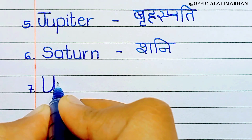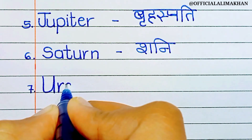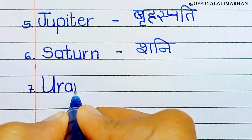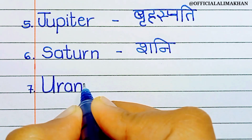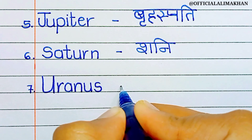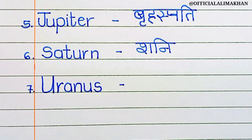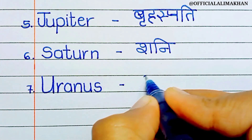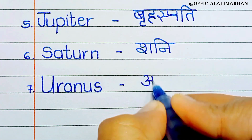Number seven, Uranus. U-R-A-N-U-S. Uranus means Arun.